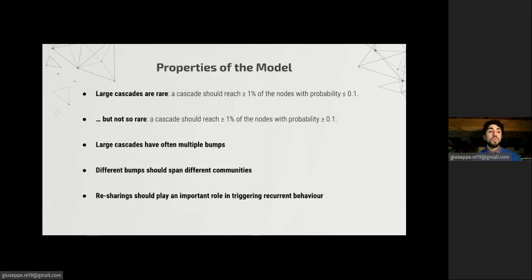And we also provided the formal definition for all the properties of our model. For instance, requiring that large cascades are rare but not so rare can be stated through something like the cascade should reach 1% of the nodes, meaning that it's large, with small probability, let's say less than 0.01, but not so rare, so also with probability larger than 0.01. And the same thing is done for all the other properties. So you can find in the paper formal definitions for our requirements and the properties.